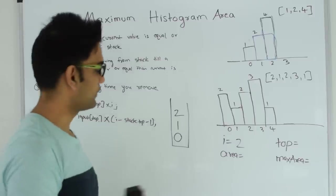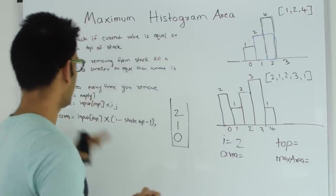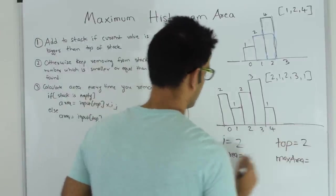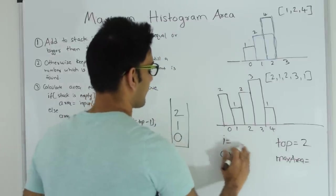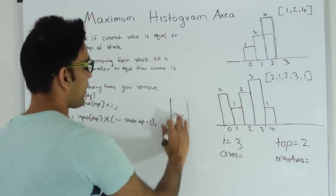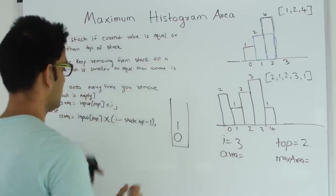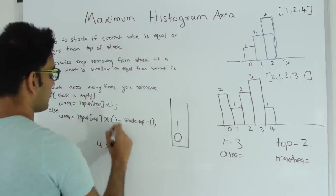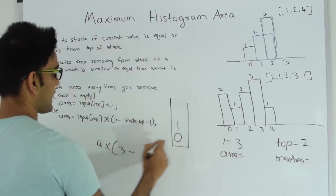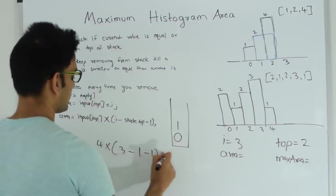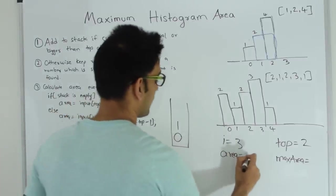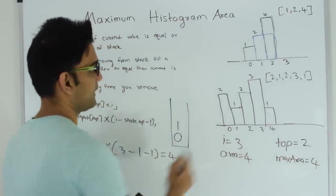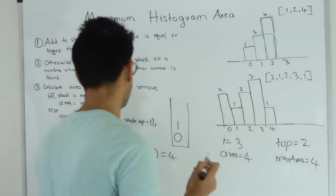So we pop from the stack until it is empty, calculating the area each time. My top becomes 2 and i is 3. Since the stack is not empty, area = input[top] × (i − stack_top − 1) = 4 × (3 − 1 − 1) = 4. My max area becomes 4, and it's clear that this bar is contributing area 4.